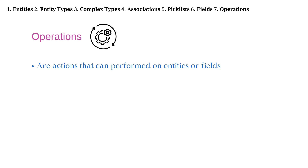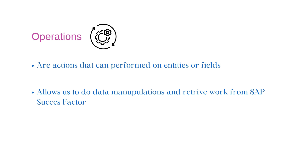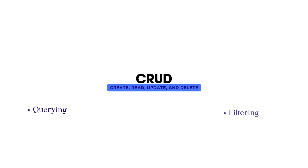The last data model object is Operations. Operations are actions that can be performed on entities and fields. Operations allow us to do data manipulations and retrievals from SAP SuccessFactors. Operations consist of basic CRUD operations — create, read, update, and delete — along with other actions like querying and filtering. In some cases, we can use specific operations on different types of entities and data access based on permissions.